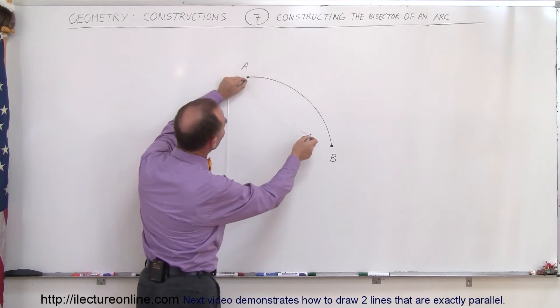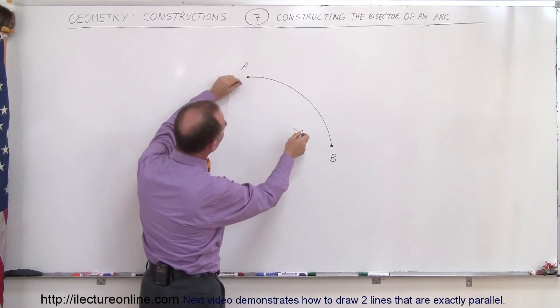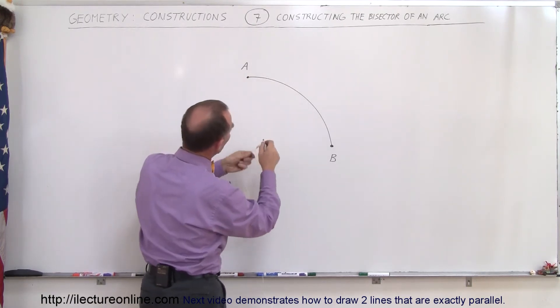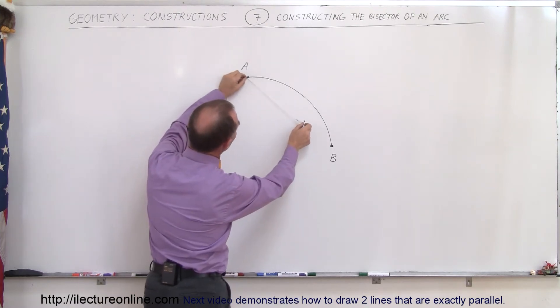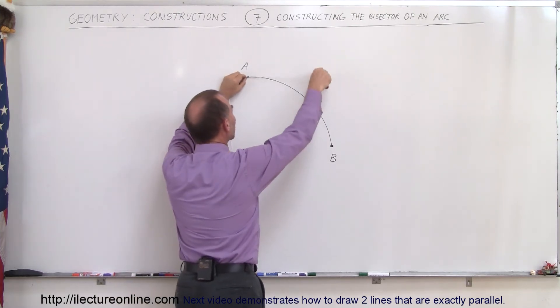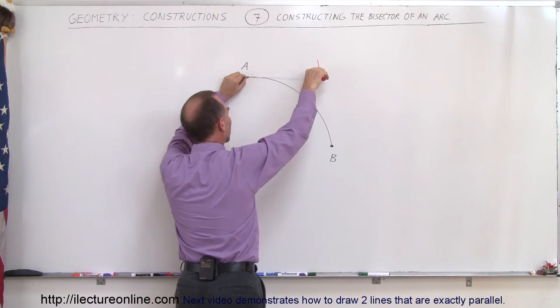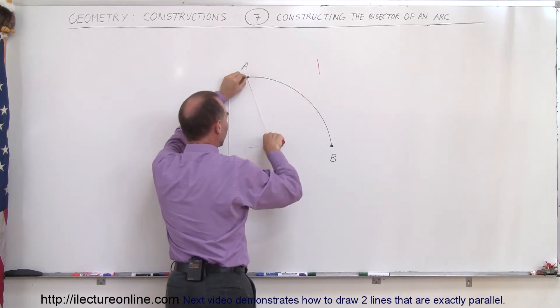Make sure you make a compass big enough so that it goes past the halfway point between A and B. You want to make sure that you go past that point right there. Then you come up here and you draw a small little arc. Then you come down here and you draw a small little arc right there.